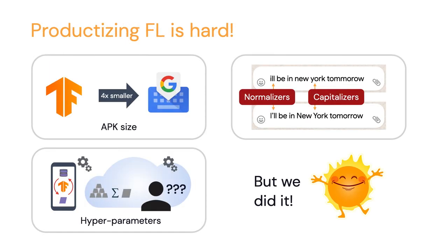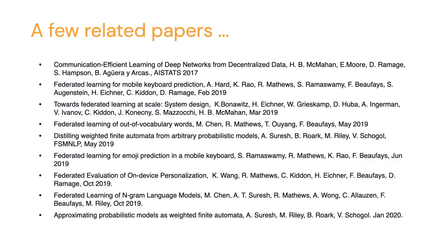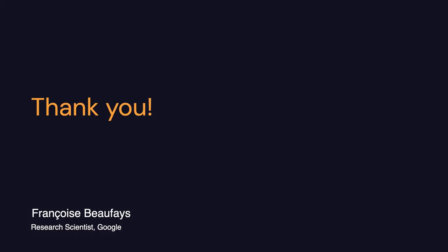To summarize: productizing federated learning is hard. It took a lot of work — minimizing models and code to make them portable, building normalizers and capitalizers that run on device, optimizing all the hyperparameters on both server and client side. But we did it. We put all these models in production and achieved improvements and a better typing experience for users. If you're interested in learning more in a fun way, there's a comic strip our colleagues have written. For more technical detail, there are a bunch of papers going into the details of all the algorithms and experiments.